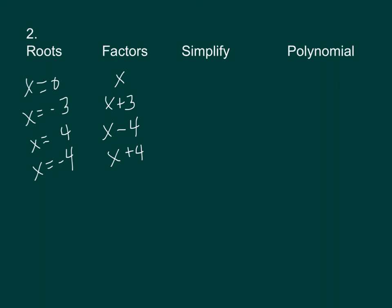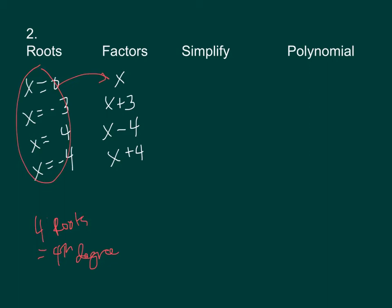Now we have four roots, so we should have a fourth degree polynomial when we're done. The factors correspond to the roots: x equals 0 gives us just x, x equals negative 3 gives x plus 3, x equals 4 gives x minus 4, and x equals negative 4 gives x plus 4. We multiply all of these factors together to get our polynomial.